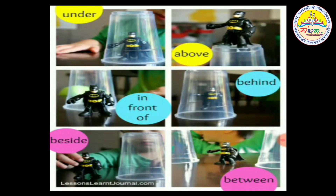Let's see — here we are looking at pictures. Your cartoon character is Batman. In the first picture, where is Batman's toy? It's under the glass. The Batman is under the glass.